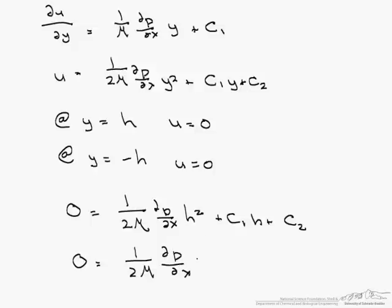Now even though it is negative h, when we square it, it becomes h squared. But now we have a minus c1 times h plus c2. Now if we add these two together, what we will end up with is something that we can use to solve for c2.